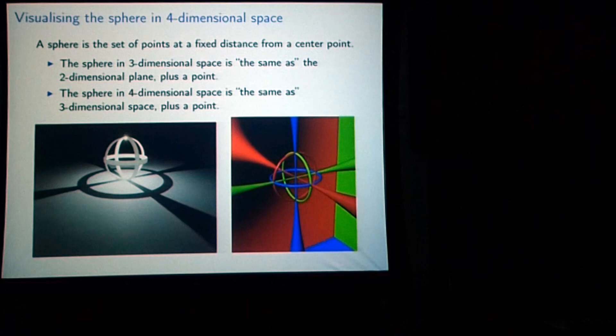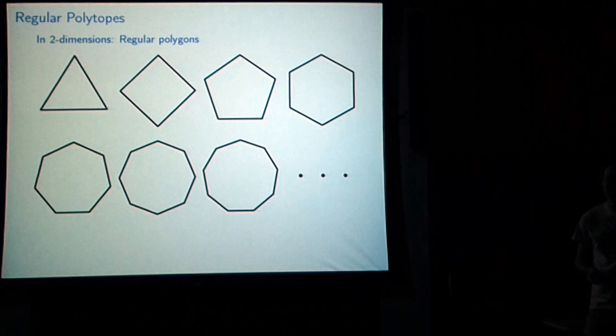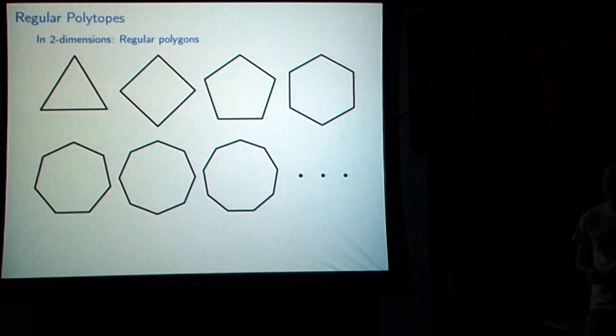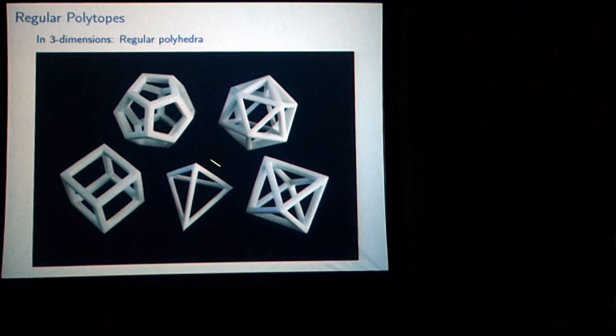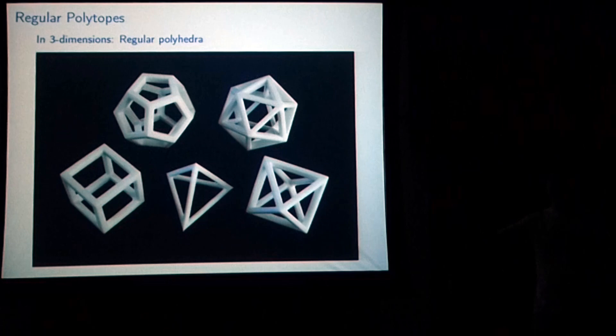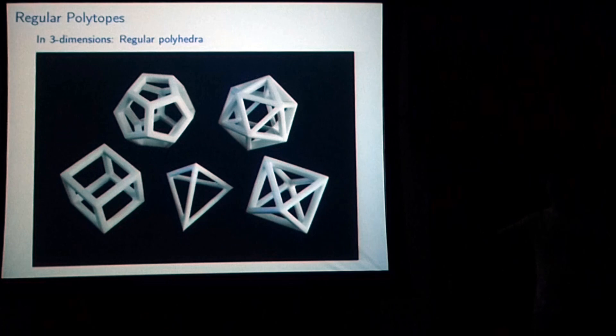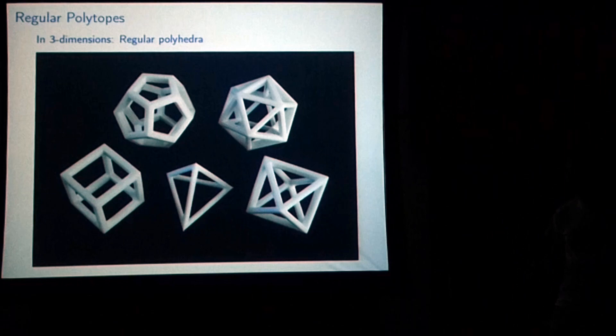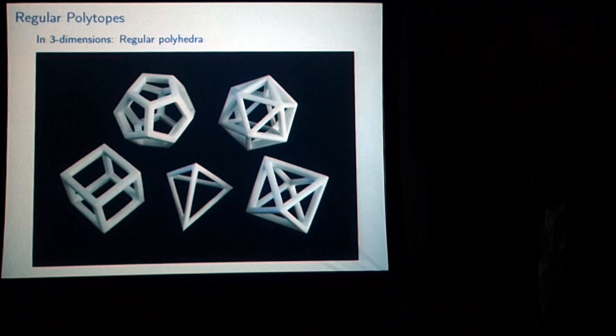Let's talk about regular polytopes. In two dimensions, the regular polytopes are the regular polygons — everybody's familiar with the triangle, square, pentagon, and so on, and there are infinitely many. In three dimensions, there are only five: the tetrahedron, the cube, the octahedron, the dodecahedron, and the icosahedron. A polytope is roughly a geometric shape in some dimension with faces that are polytopes of the next dimension down. It's regular when all the faces are the same, all the vertices are the same, and everything looks the same as everything else.